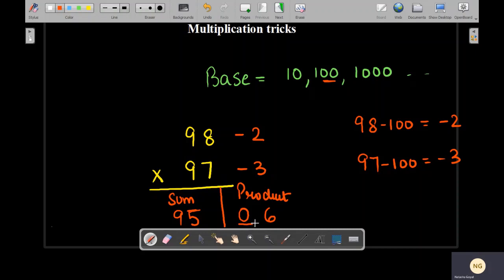So we have to take care that if the base is having two zeros, then the product should have two digits as well. If the base is having three zeros, then the product will be having three digits.